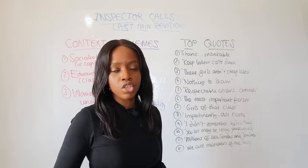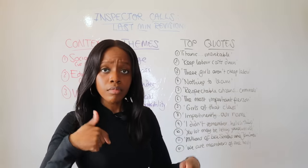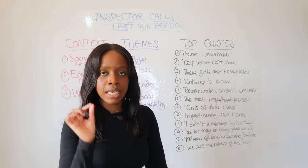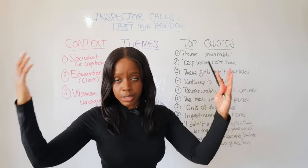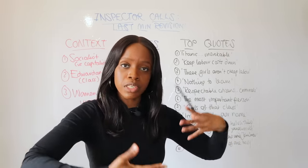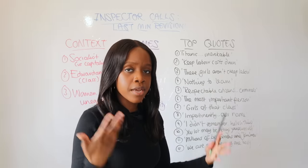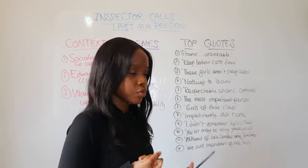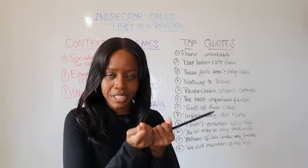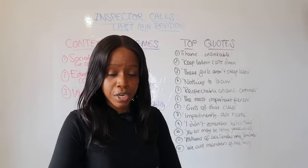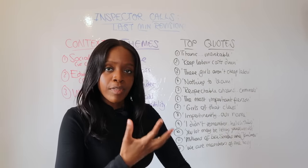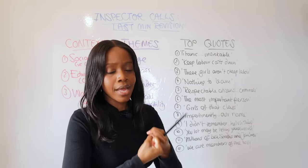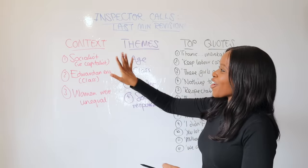The final two quotations are for Inspector Goole. First, his parting message to the Birling family: 'there are millions and millions and millions of Eva Smiths and John Smiths' — repeating 'millions' three times to say that even if they treated Eva and Daisy badly, they can redeem themselves by helping the many poor people in society. The second, very powerful parting message places him in an almost godly position, borrowing biblical language: 'We are members of one body' — like the Eucharist. He reminds everyone, especially upper-class people, that their actions affect the poor and that they have a duty and responsibility to help them.